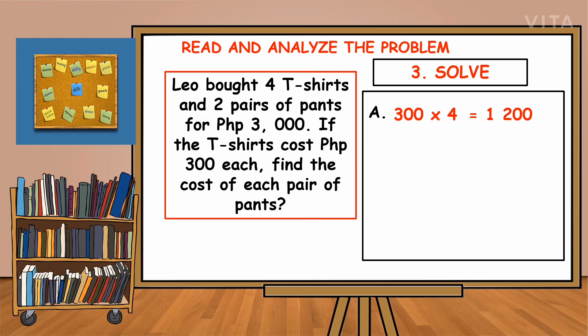After we get the product, we will subtract 1,200 from 3,000 pesos because that's the total amount of everything Leo bought. So 3,000 minus 1,200. 0 minus 2 cannot be, so we borrow. 0 will become 10. 10 minus 2 is 8, then 3 minus 1 is 2, then 2 minus 1 is 1. So we have 1,800 pesos.